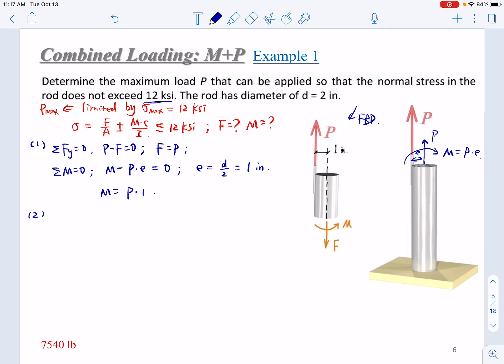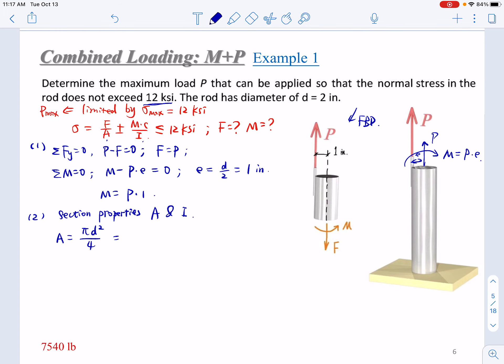So in the second step, you can determine the section properties. What do we need? Look at the equation. We need A and I. The A is just a circle, pi D squared over four. So D is two, so this just equals pi. It's 3.14 square inches. And the I would be pi D to the fourth over 64. So this will be D equals two, this will be 0.785. It's a quarter of pi.